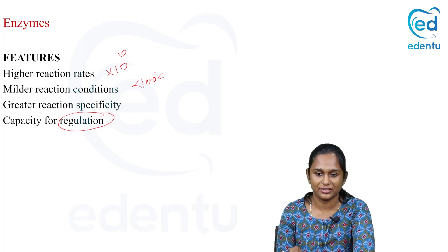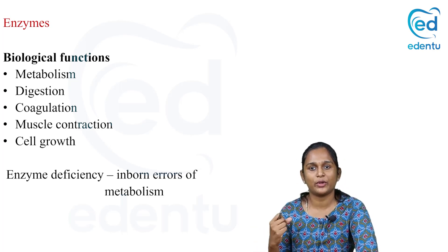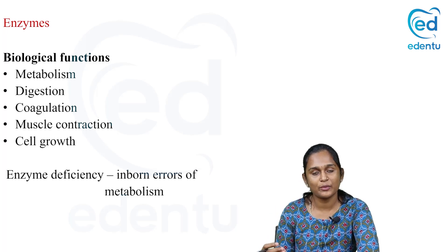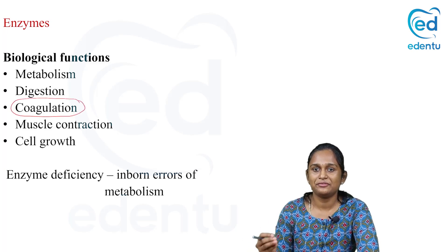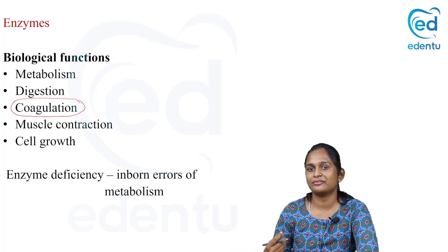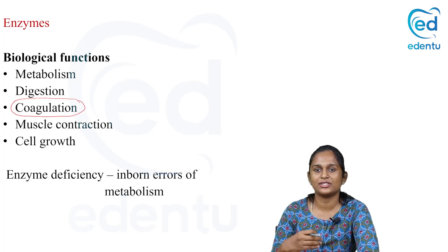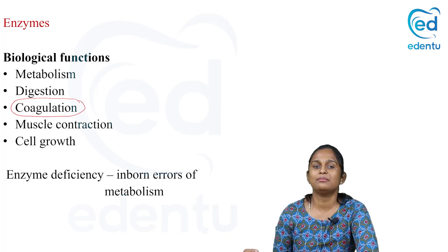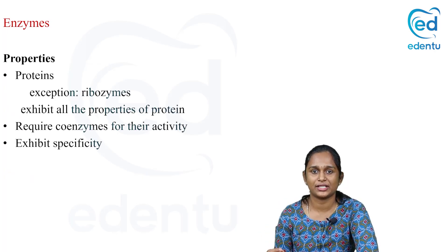What are the biological functions of enzymes? They have many roles. They are required for the digestion and metabolism of macromolecules. They are required for muscular contraction and coagulation. They are required for cellular growth. If the enzyme is deficient, it will result in inborn errors of metabolism — there are many such errors in carbohydrate, lipid, and amino acid metabolism. So the enzyme plays a wide role in the biological system.